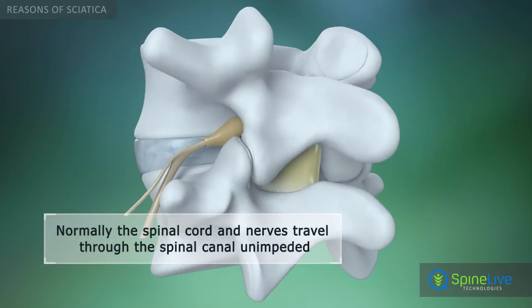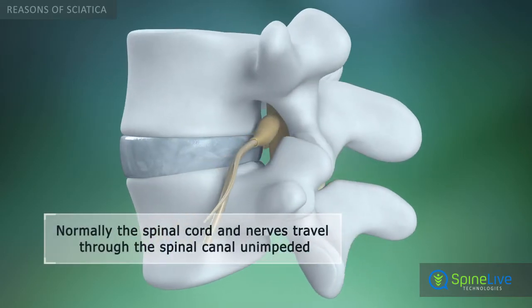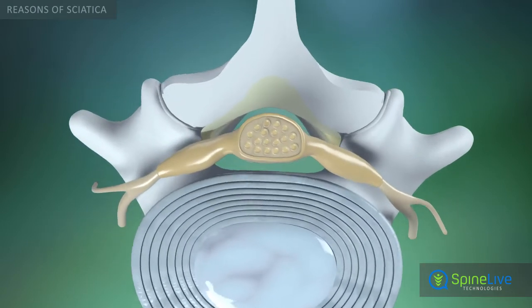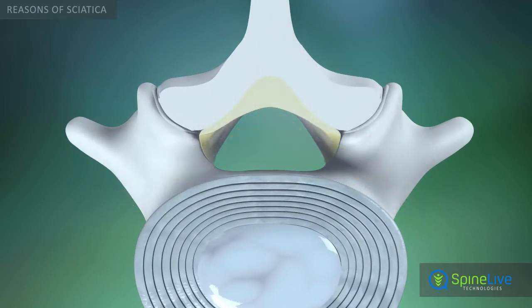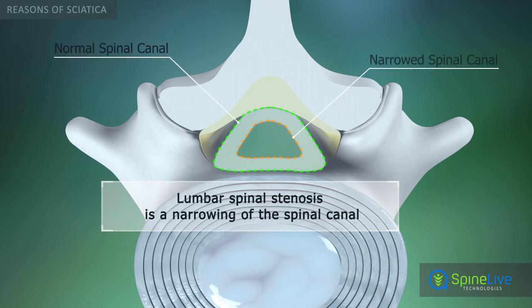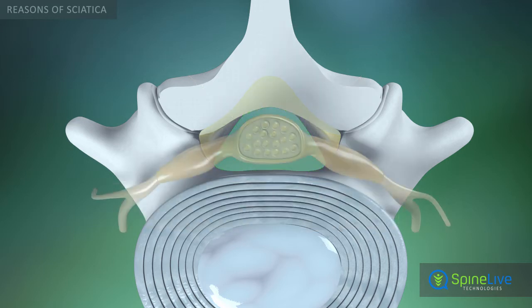Lumbar spinal stenosis can also cause sciatica. Normal wear and tear and degenerative effects of aging may lead to abnormal narrowing of the spinal canal and foramina. The main reasons for this narrowing are disc degeneration and bulging.